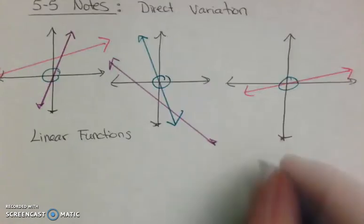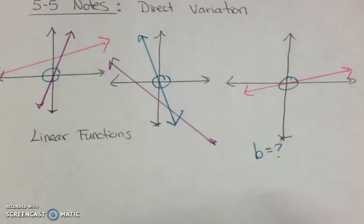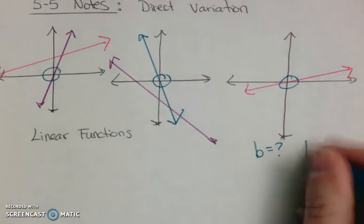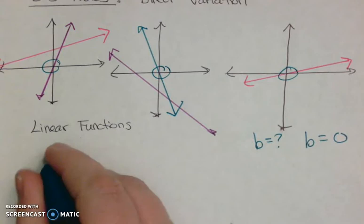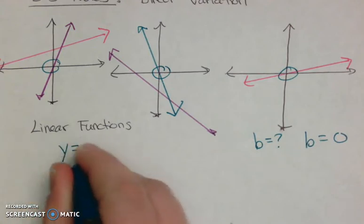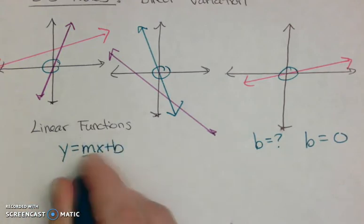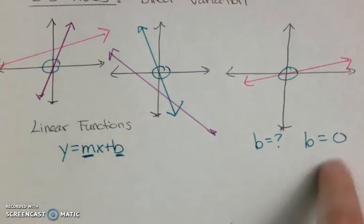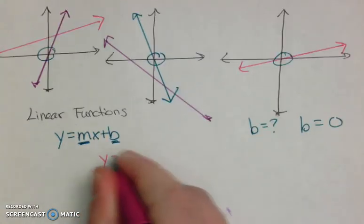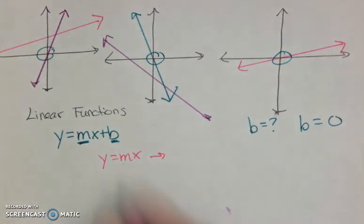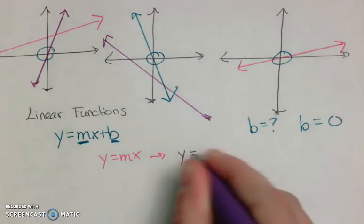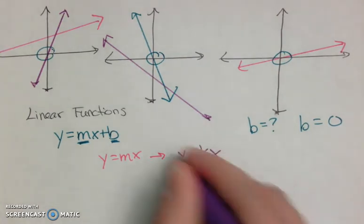If it goes through the origin, what is the y-intercept going to be equal to? It's going to equal zero. So if you think about a linear function in slope-intercept form — y = mx + b — where m is your slope and b is your y-intercept: if your y-intercept is always zero, it doesn't have a b. So instead of y = mx, that's essentially what a direct relationship is — direct variation — but it has a different form: y = kx.